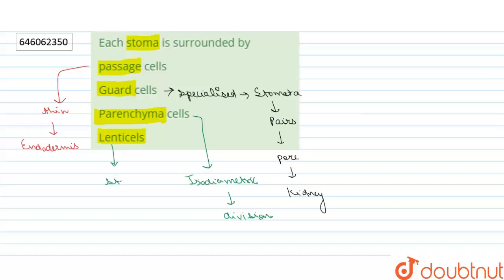They allow the gaseous exchange between the environment and the internal tissues of the plant. So the right answer of our question will be option number two: stoma is surrounded by guard cells.